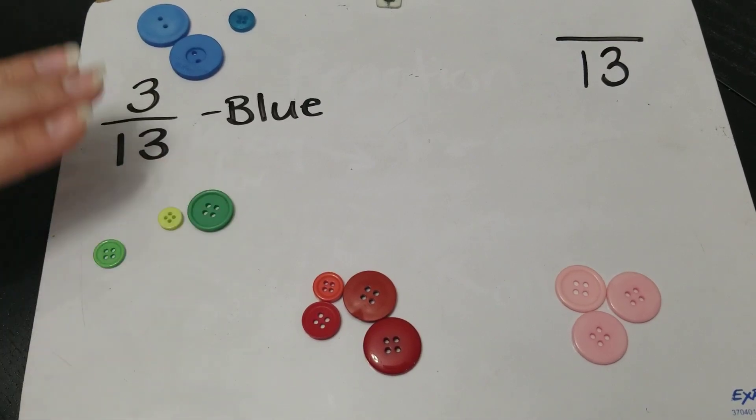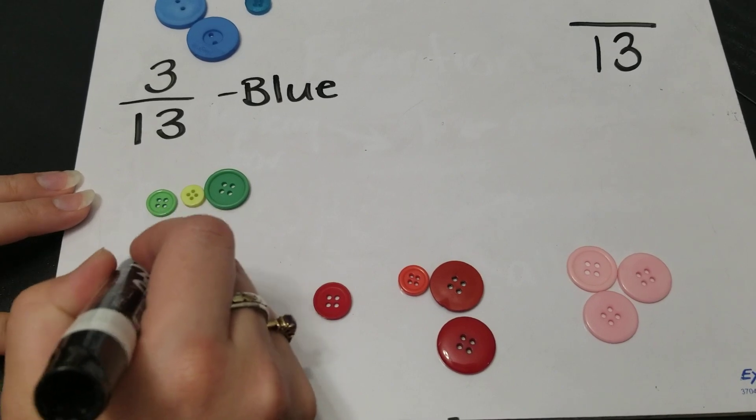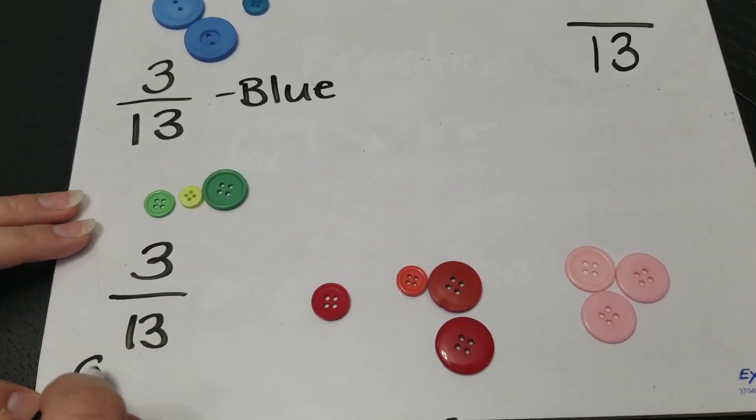Let's try the green ones. Oh it looks like I have three again. So three out of my 13 buttons are green.